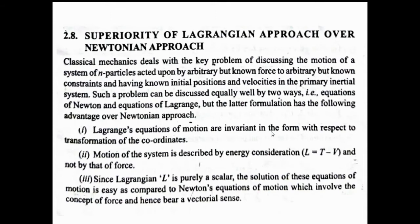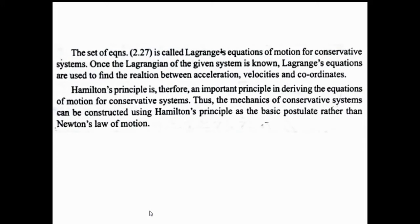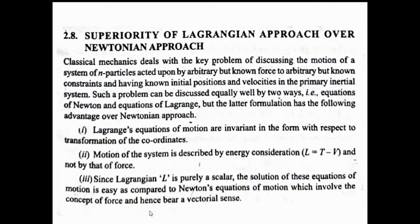The Lagrangian equation (equation 2.27) remains the same regardless of coordinate system — whether q_k represents x, y, z in Cartesian; r, theta, phi in spherical; or r, theta, z in cylindrical coordinates. In contrast, Newtonian equations change form when switching coordinate systems. The second advantage is that the motion of a system of particles is expressed by energy in the Lagrangian approach: the Lagrangian L equals T minus V, the kinetic energy minus the potential energy.